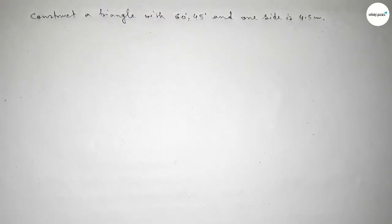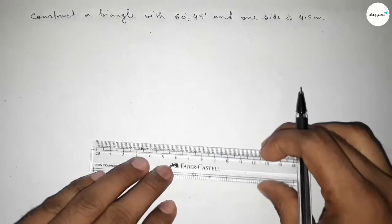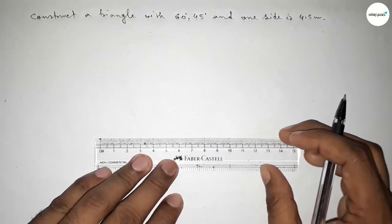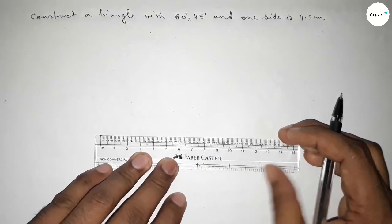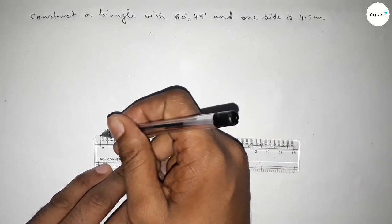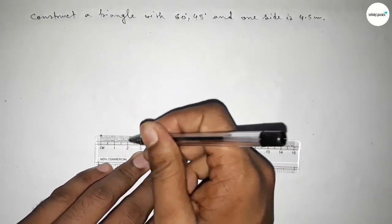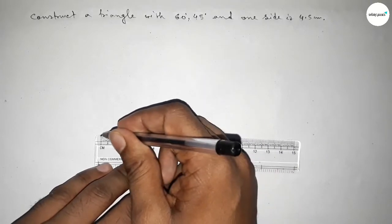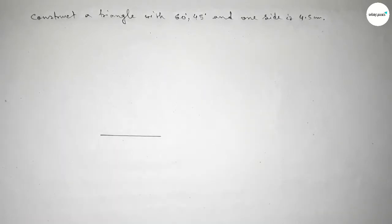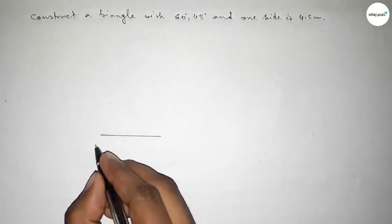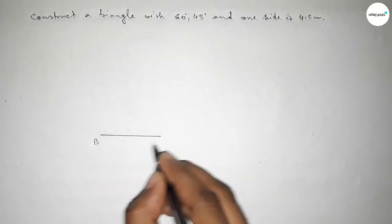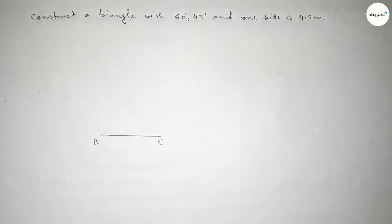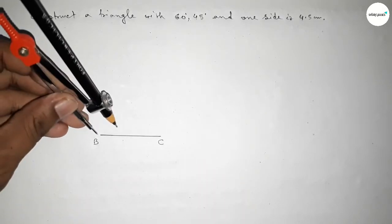First of all, we have to draw a line of length 4.5 centimeters. This is 4.5 centimeters, taking point B here and point C here. Now we have to draw a 60 degree angle at point B.